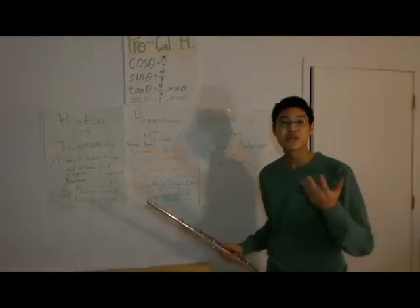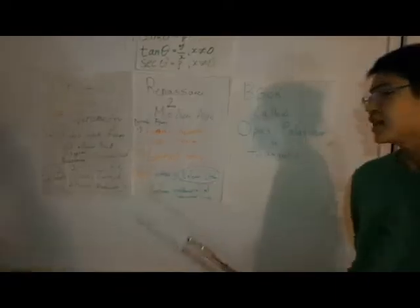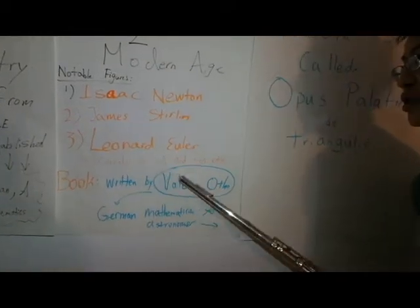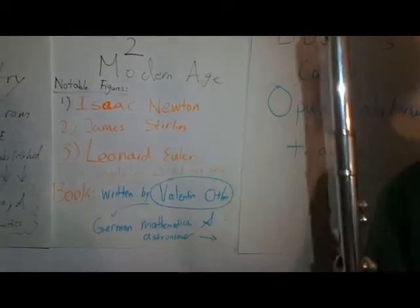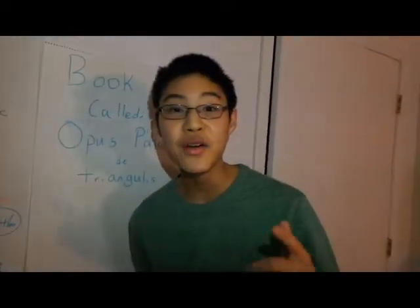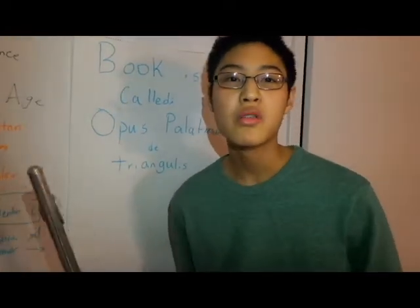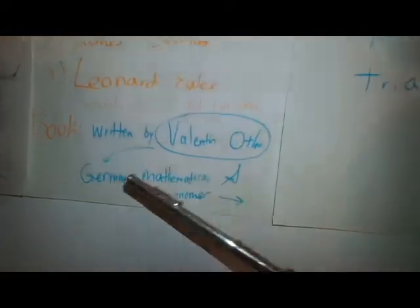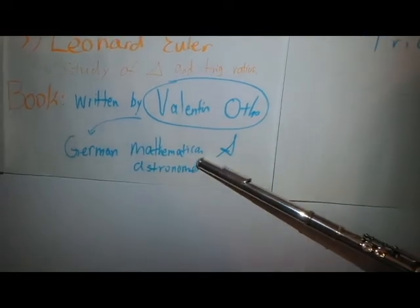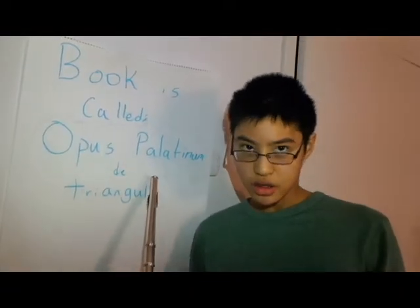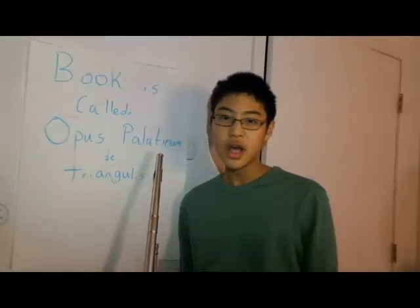Isaac Newton, the guy with the apple, James Stirling, and my favorite, Leonard Euler, who signified the study of trigonometry and trig ratios. But the most important thing that we're going to be talking about is a book written by Valentin Otho, a German mathematician and astronomer. And you know what the book is called? It's called the Opus Palatinum de Triangulis. I guess you didn't know that before.